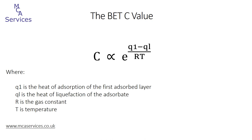Returning to the BET c value: in its derivation it's clear that c is a function of the enthalpy of adsorption of the adsorbate to the sample surface. Adsorption is an exothermic process, so c can only be a positive value. Since it's related to the BET transform plot by the intercept of the regression line, this intercept must also be positive. This is an important fact to remember when determining the relative pressure range to apply to BET surface area calculation, and it becomes very useful when analyzing very high or very low surface area materials.